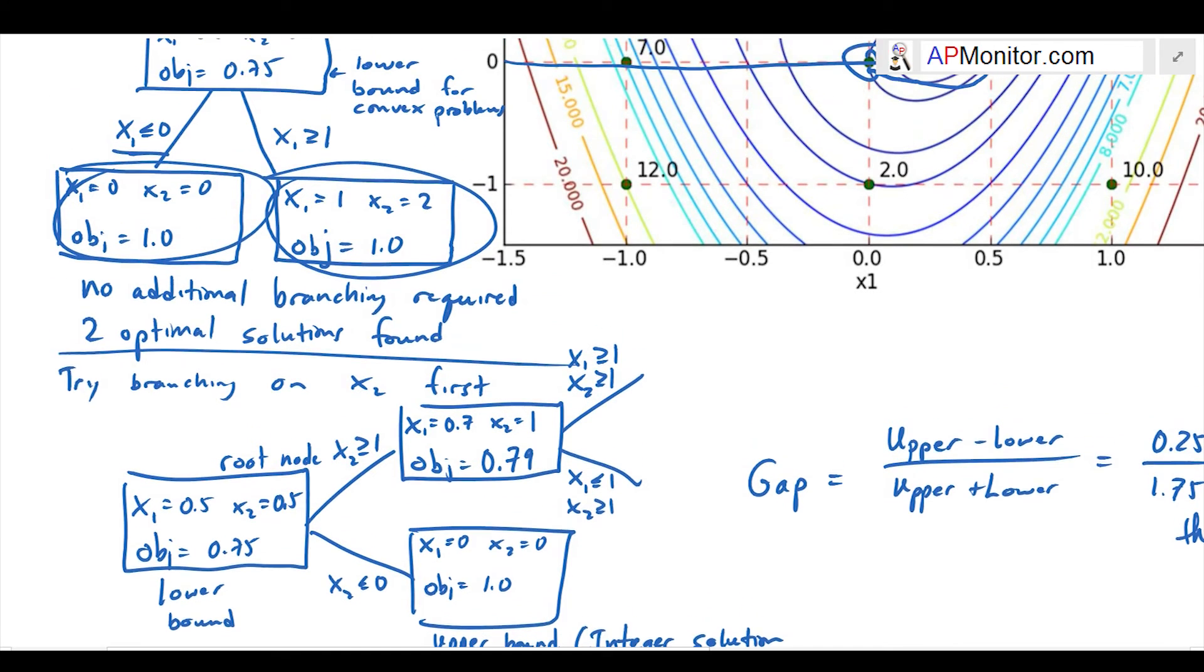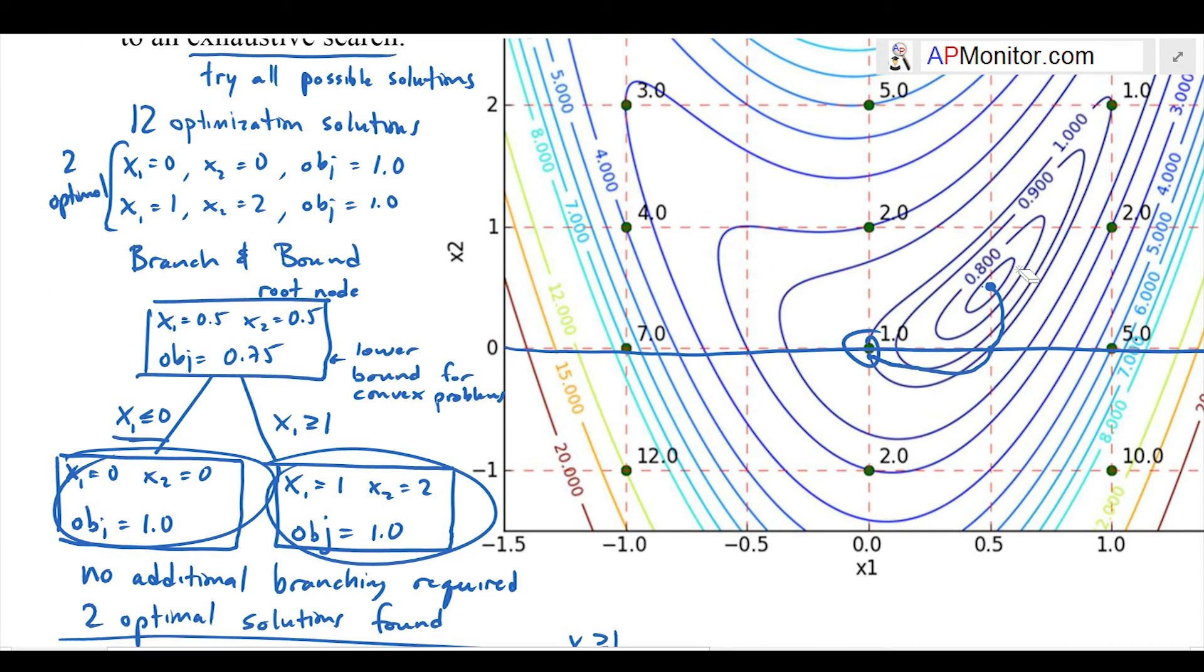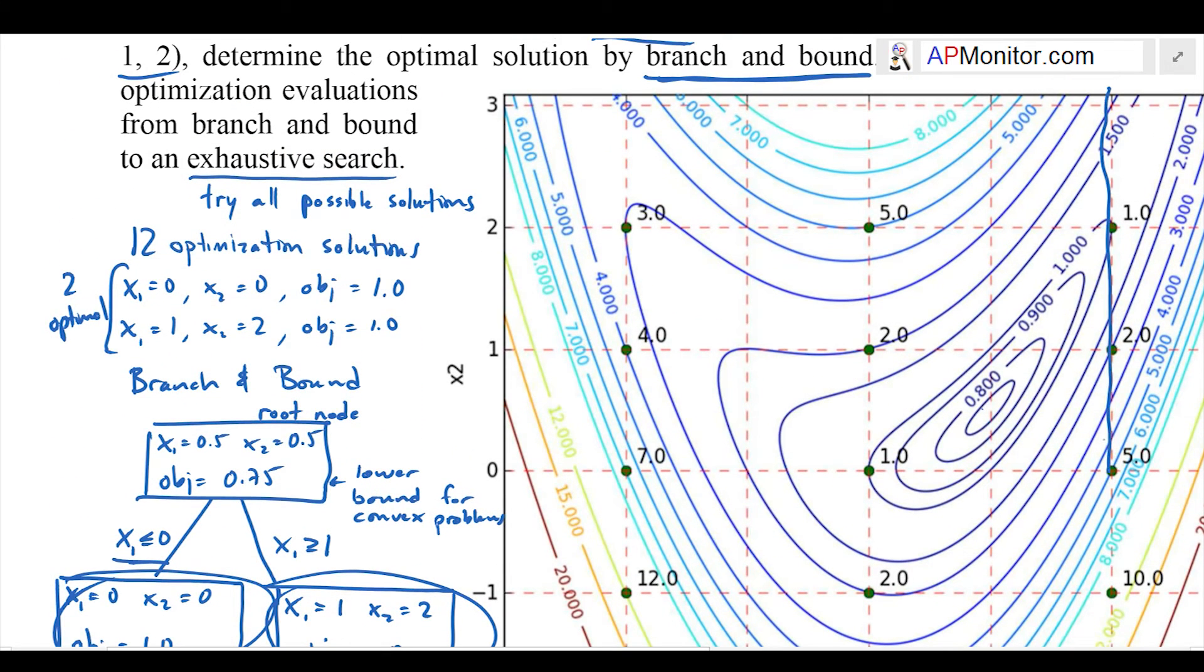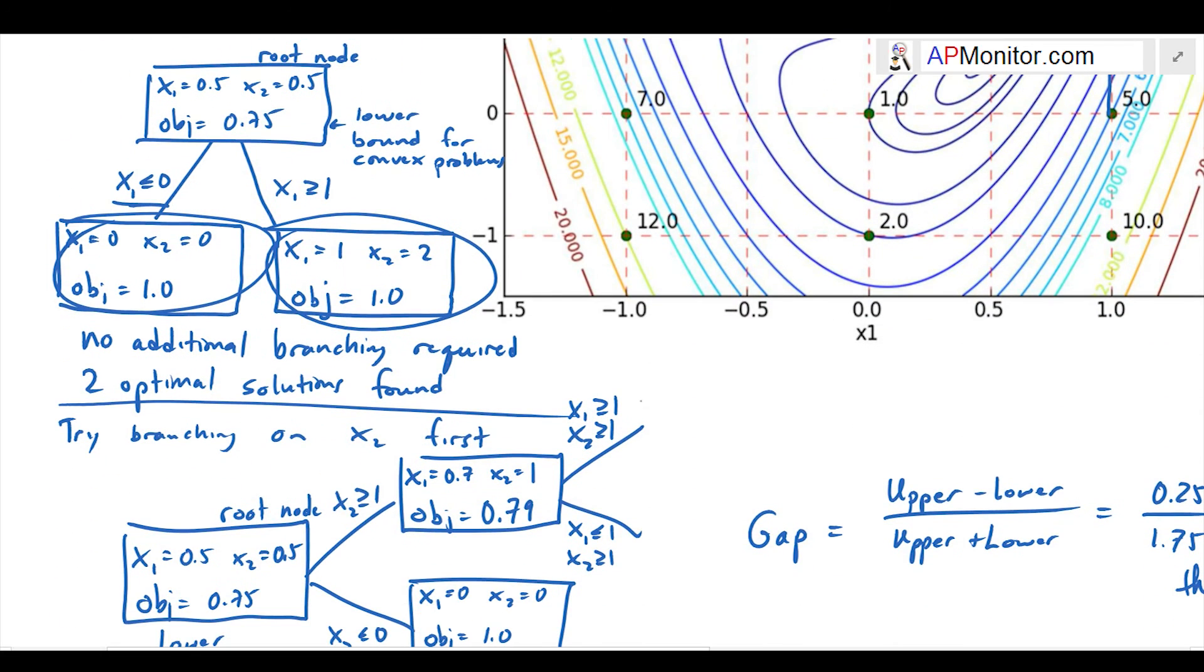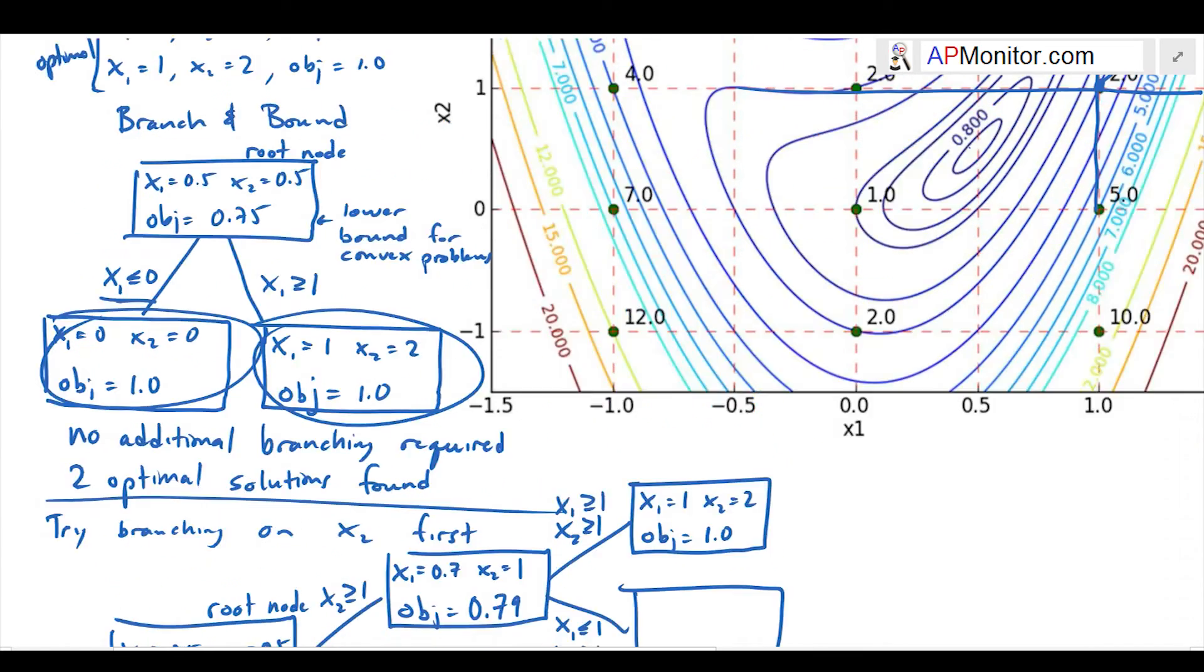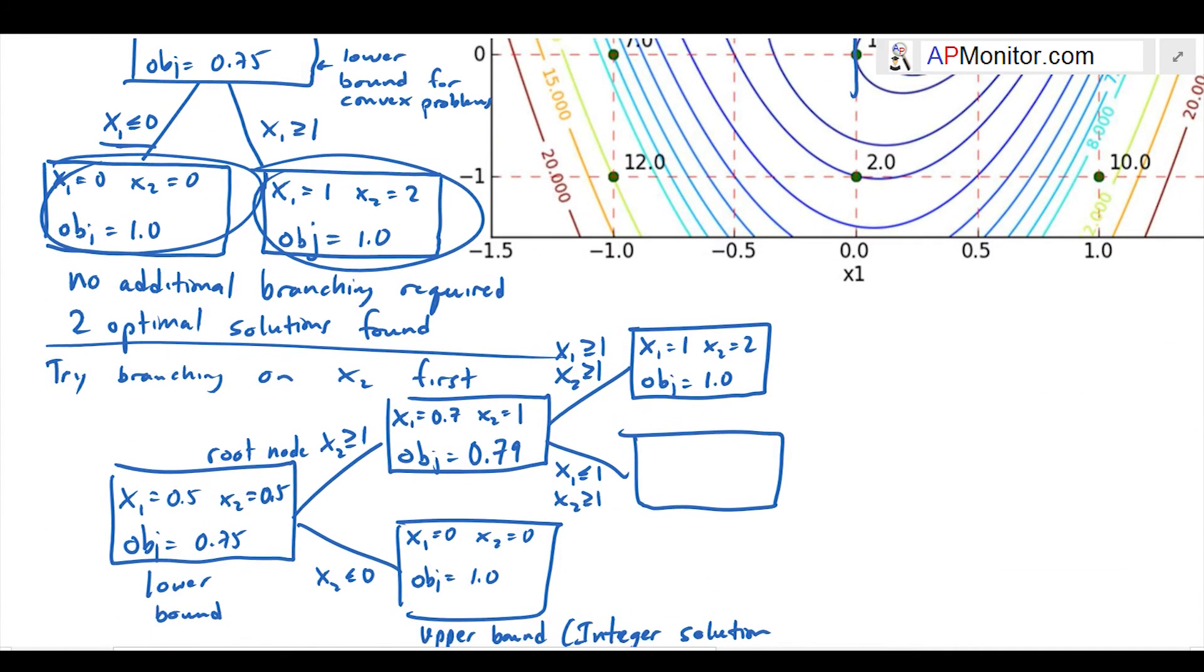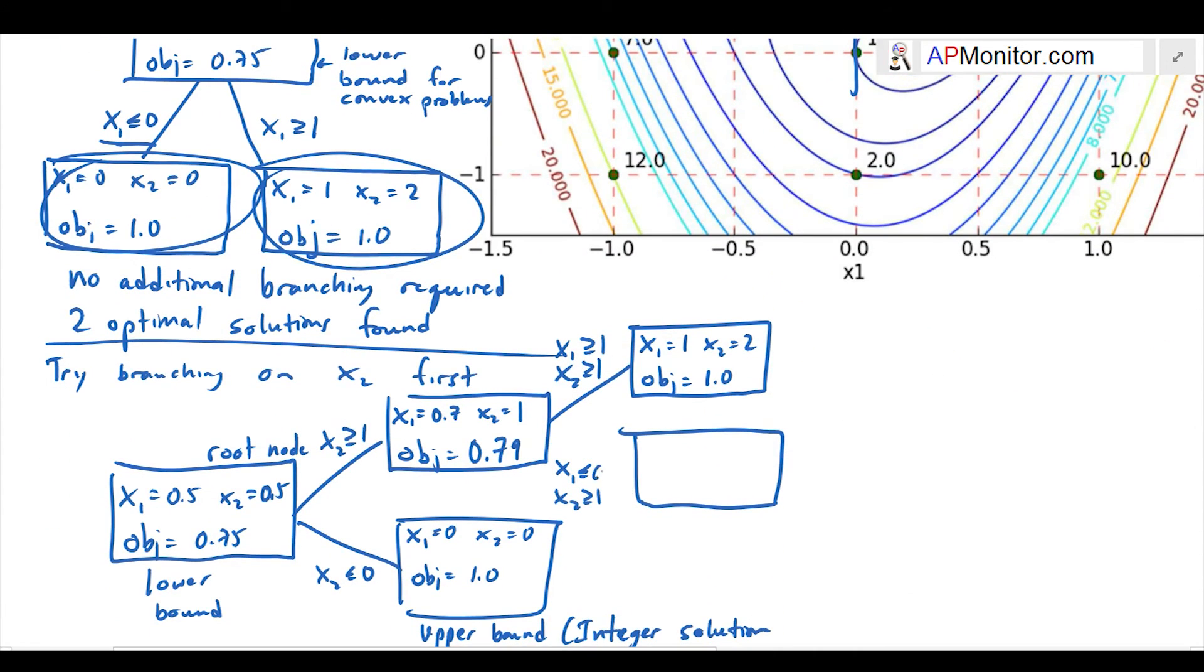I'm going to draw this first one and it finds an optimal solution: x1 equals 1, x2 equals 1, objective equals 1. Then my next one, I have to continue evaluating this because that potential solution could be better. I have another branch here, which is x1 equals 0, x2 equals 1, and objective equals 2.